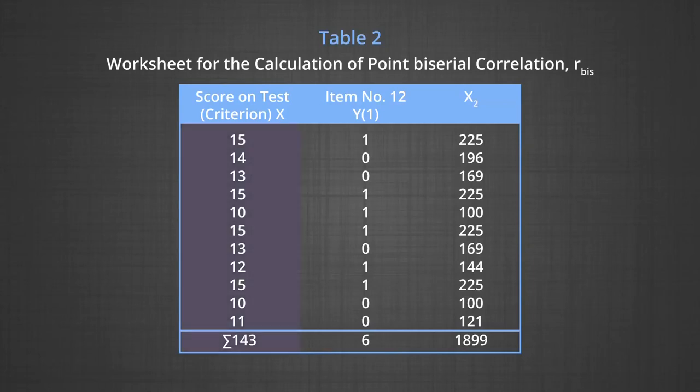Column 1 shows scores on test (criterion), column 2 shows item number 12 scores (1 or 0), and column 3 shows X squared. The scores on the total test total to 143, scores on the item total to 6, and X squares add up to 1899.